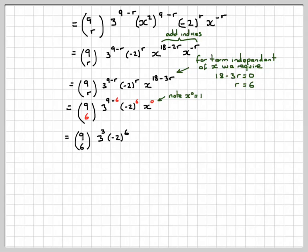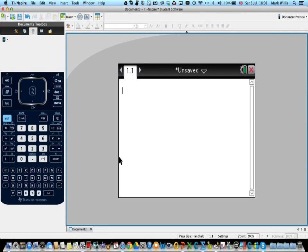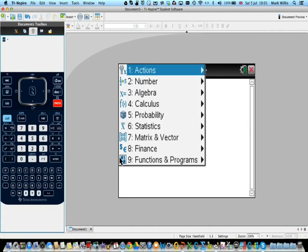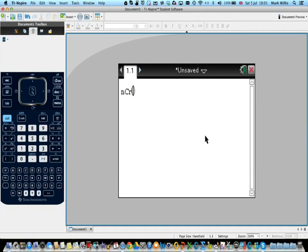We can actually leave the answer like that if it was a non-calculator exam, but if we're using the calculator exam, we go to the calculator, select calculation mode, which is this one here. Go to menu, and select probability, and we want number 3, which is combinations.